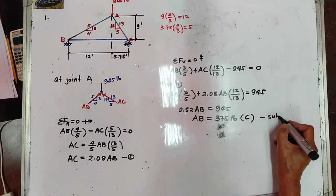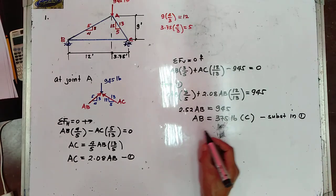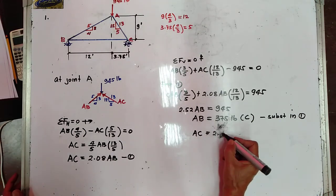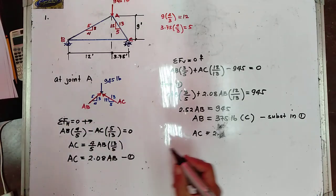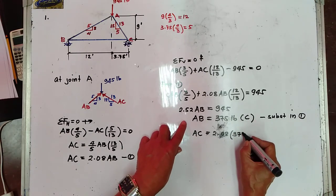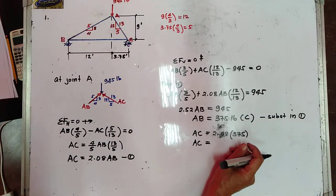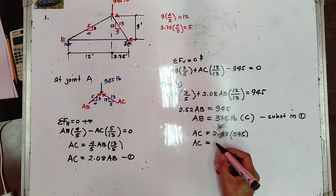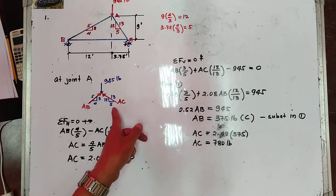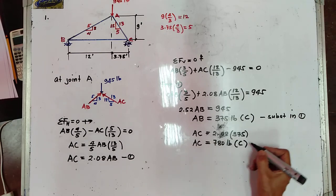Substituting AB = 375 into equation 1: AC = 2.08 × 375 = 780 pounds. Again we get a positive value, so the assumed direction of AC is correct — it is towards the joint. Therefore AC is in compression.